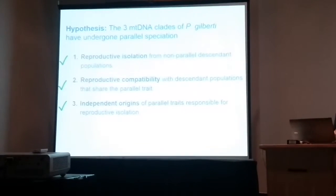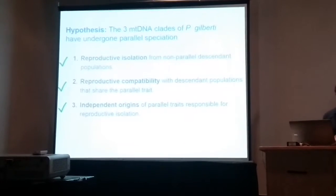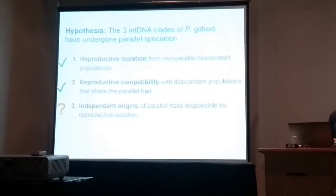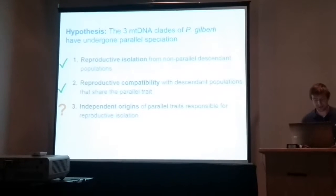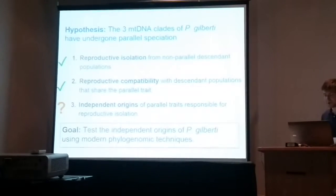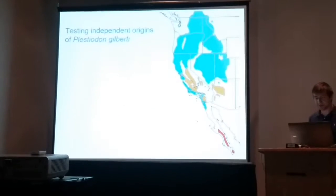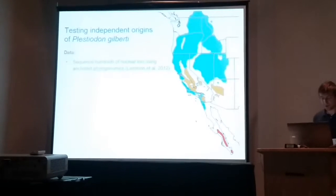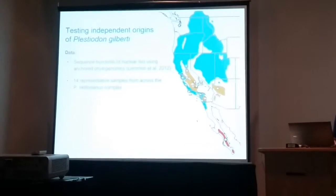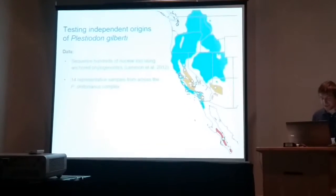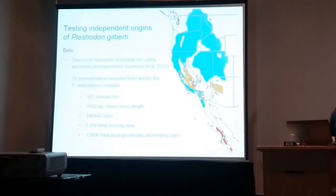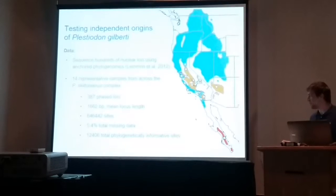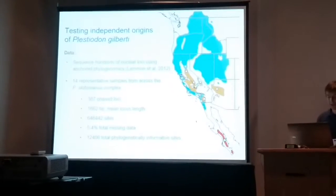But of course, as we know from the previous talk, mitochondrial introgression can be quite common. So my goal for this project was to test the independent origins of Plestiodon gilberti using modern phylogenomic techniques. To do this, I used the UCE phylogenomic approach in collaboration with Alan Leaché to sequence hybrids of ten conservative nuclear loci. I sampled 14 representative samples from across the mitochondrial clades in the complex, and we obtained 387 phased loci for about 640,000 sites, about 12,000 of which were phylogenetically informative.